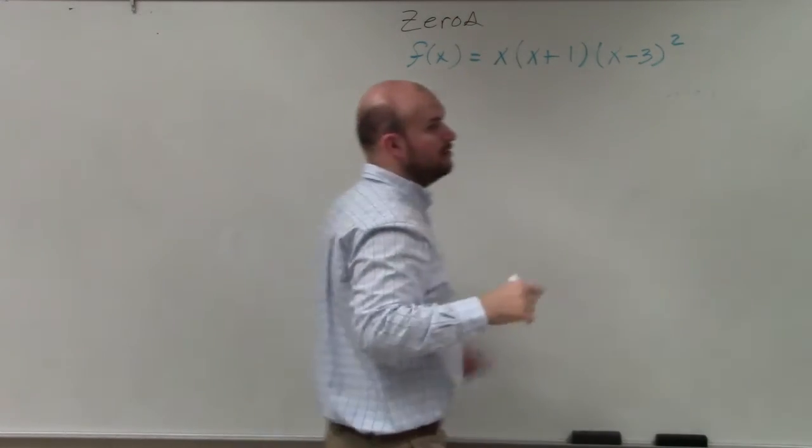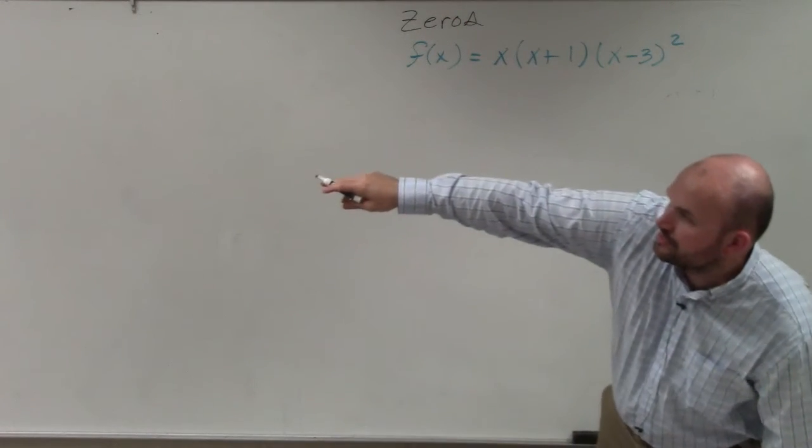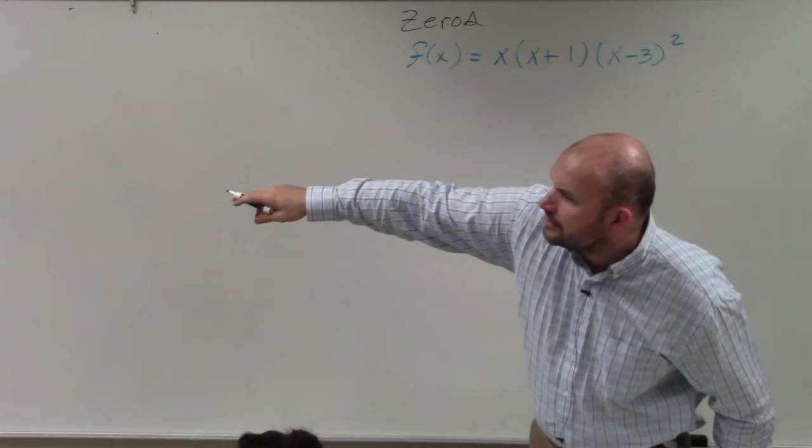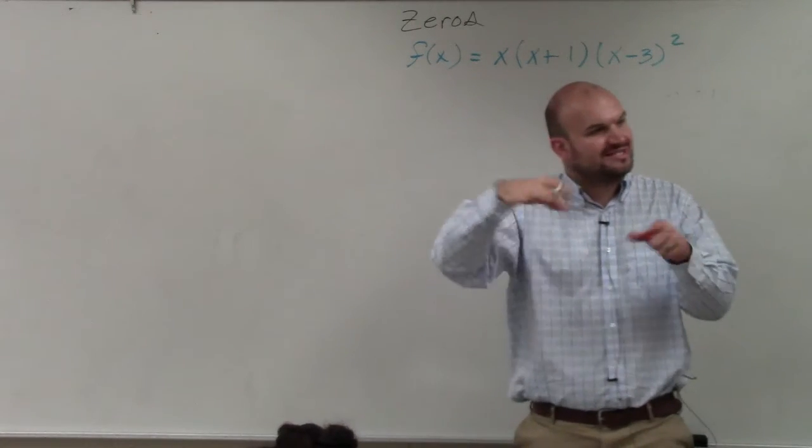the zeros of a polynomial, if you guys remember, we talked about on number 13, that's where the graph crosses the x-axis, right?